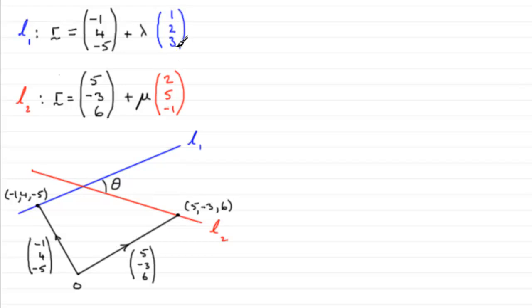Now remember that these two vectors give a vector that is in the direction of the lines. So when we look at the vector 1, 2, 3, there it is there. And the vector 2, 5, minus 1, they are two vectors in the directions of the line. They're parallel to the line.